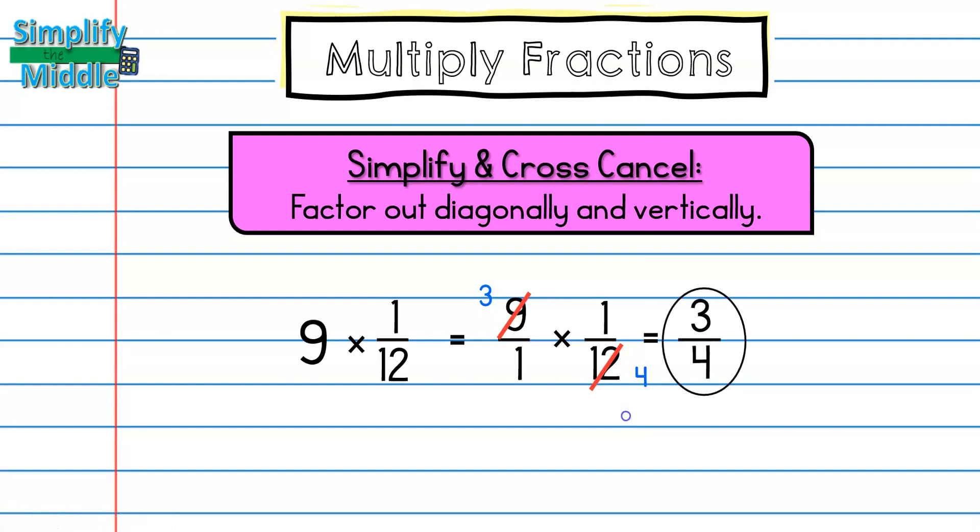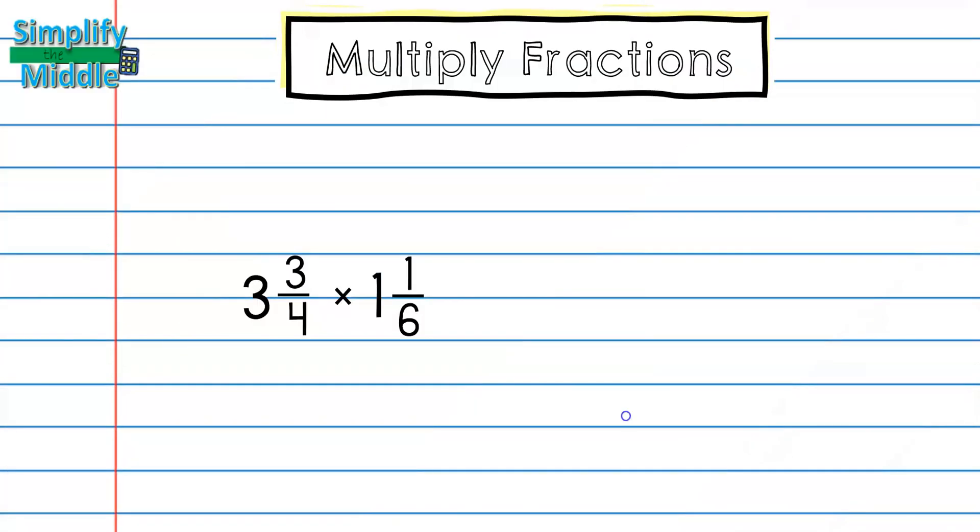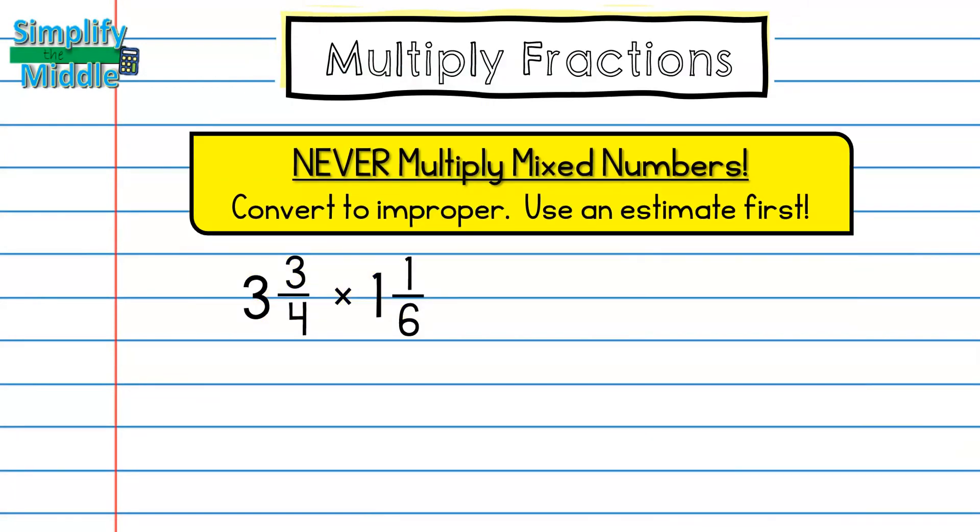Let's look at some examples with mixed numbers. For a mixed number, it's important that you do not just multiply the whole numbers and then the fractions. You need to convert this first into an improper fraction. Also, it makes a lot of sense to estimate here to find out if your answer is reasonable. I would estimate 3 and 3 fourths as about 4. And 1 and 1 sixth is about 1. So my estimate is 4 times 1, or 4. So my final answer should be close to that.